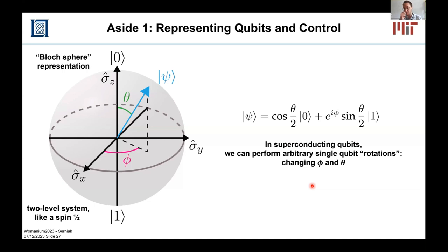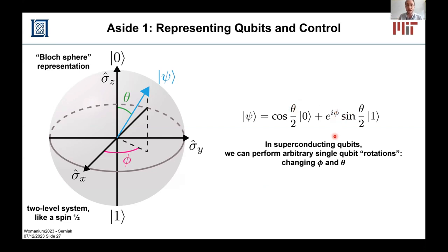One quick aside before we talk about the actual control of qubits: when we talk about qubits and differentiating them from classical bits of information, one way to represent them is using the Bloch sphere representation, where the pure states of a qubit are represented by any points on the surface of a sphere. You can write any arbitrary single qubit wave function parameterized in polar coordinates with some theta and phi variables. One thing that's really nice about superconducting qubits is that we can form arbitrary single qubit rotations — any gate that we want to do on a single qubit, we can do — meaning we can set theta and phi to whatever we want. We can do that with microwave pulses.